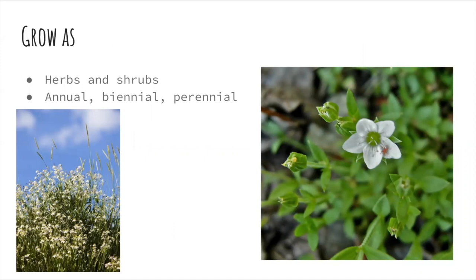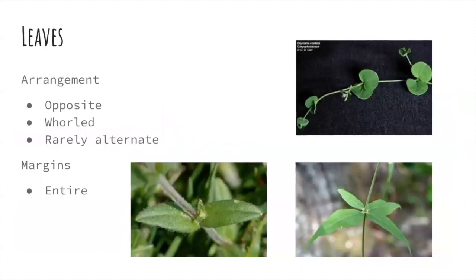Caryophyllaceae grows as herbs and shrubs and is annual, biennial, or perennial. Its leaves show opposite, whorled, or rarely alternate arrangement, and its margins are entire.